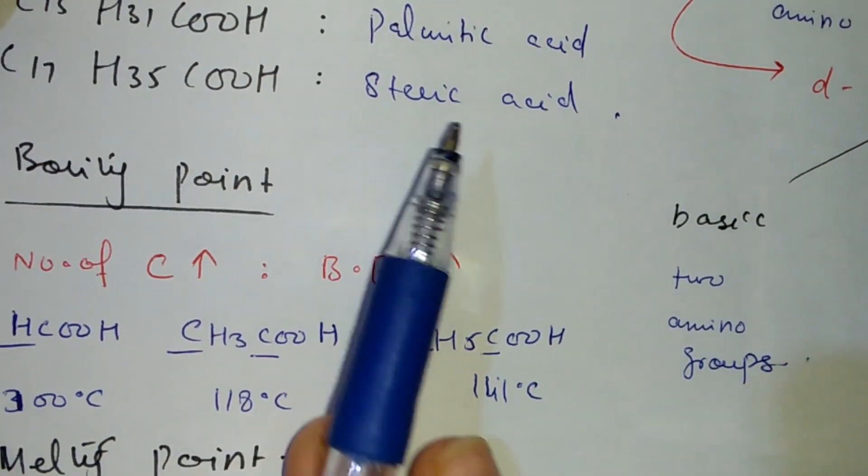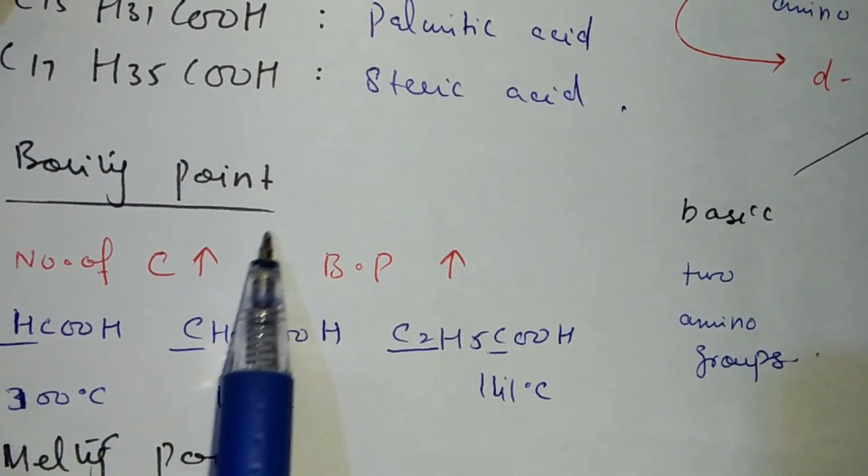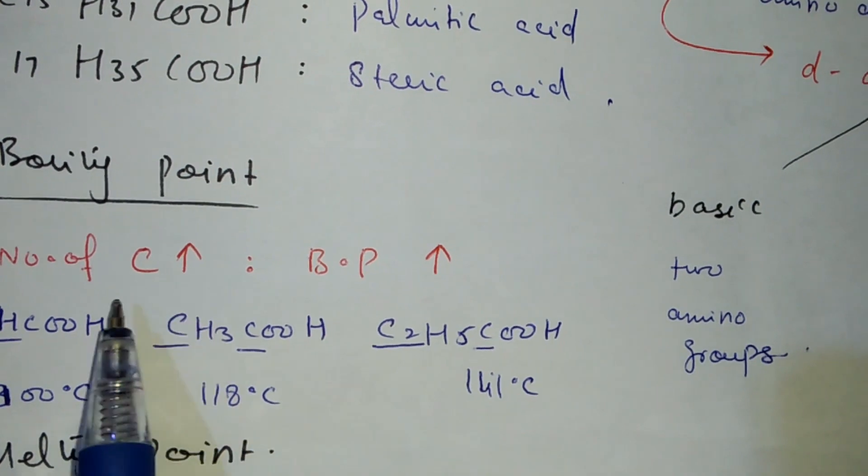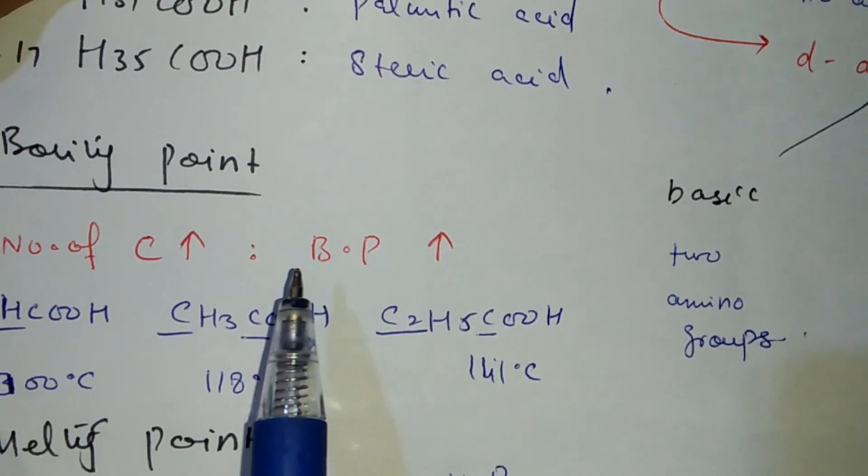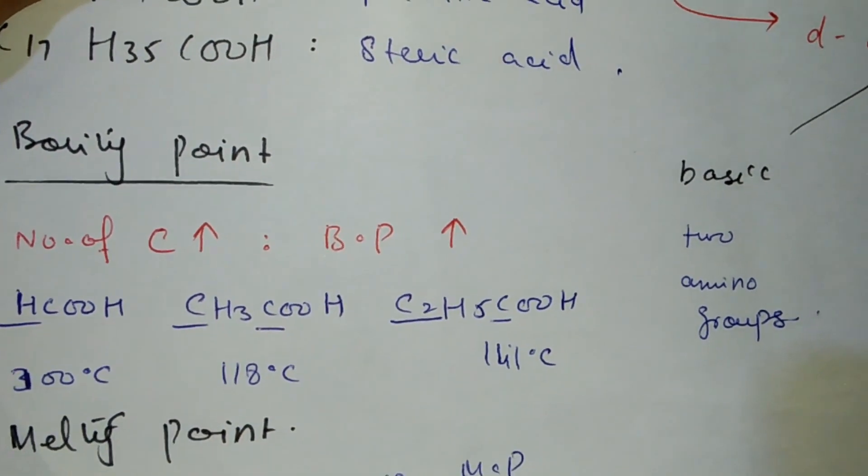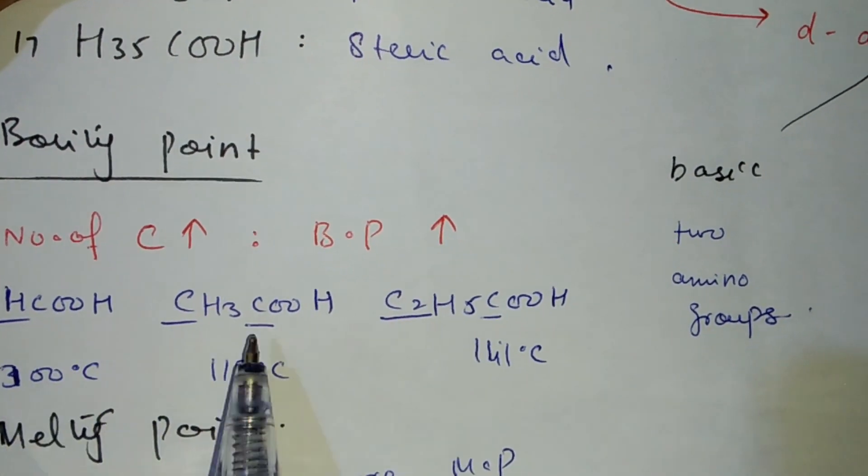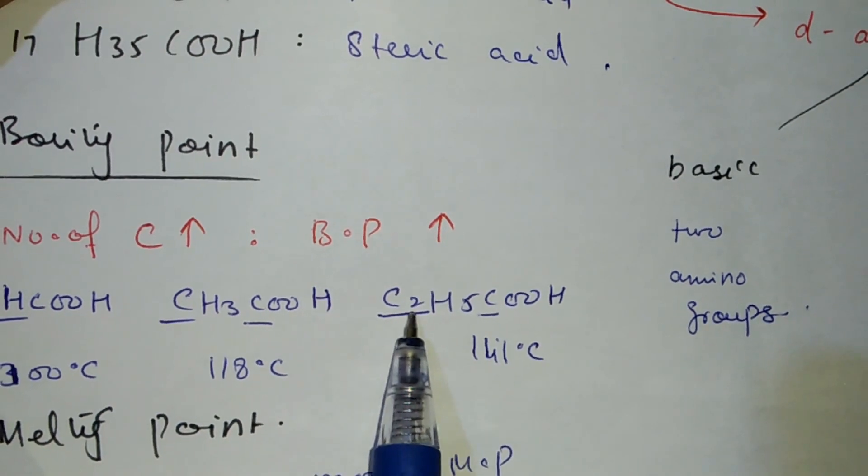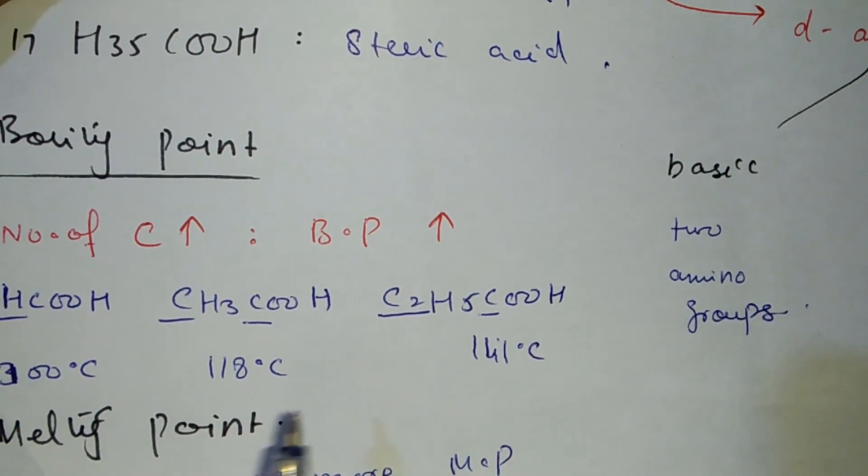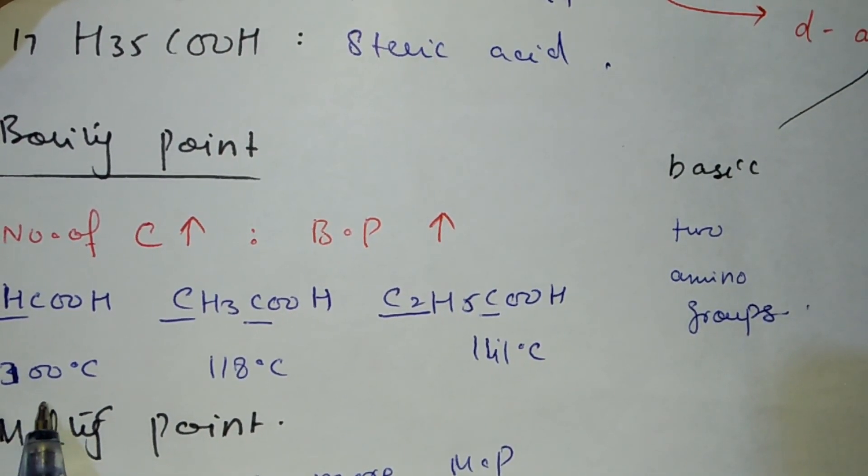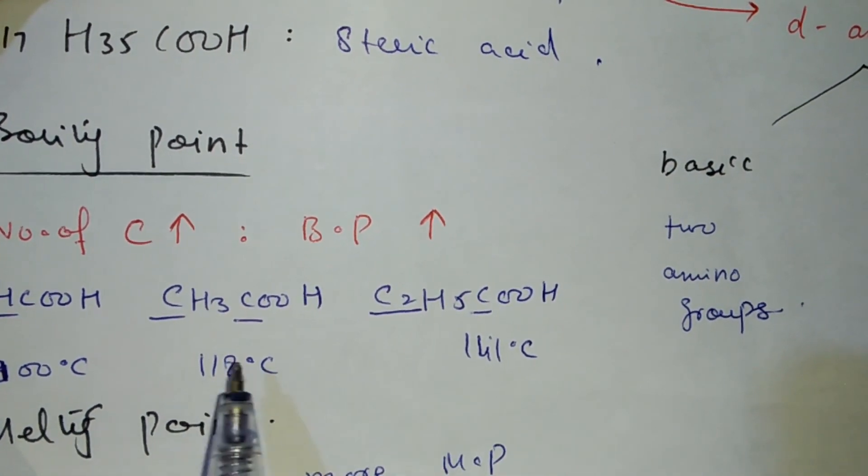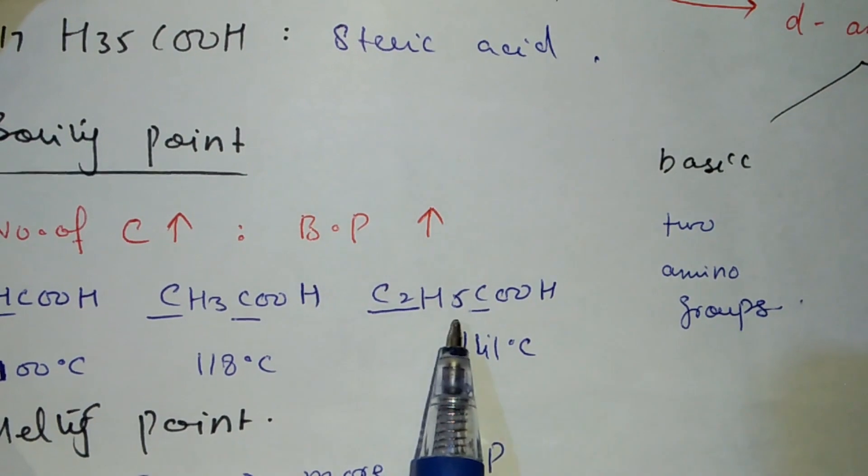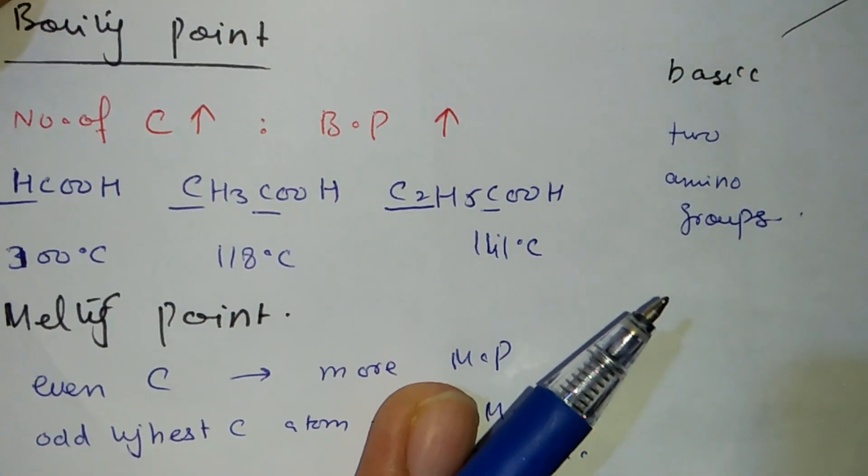Now for physical properties and boiling point, we have to remember that as the number of carbons increases, the boiling point will be more. Here we have one carbon at 100°C, two carbons at 118°C, and three carbons at 141°C. As carbon number increases, boiling point increases.